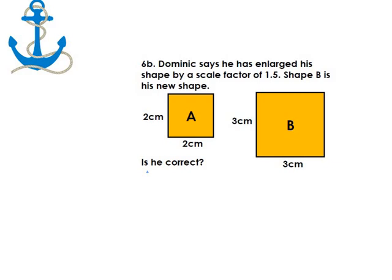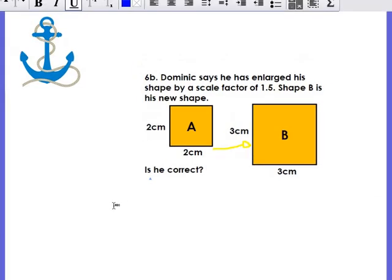He is then saying that his new shape, which is B, has been times by a scale factor of 1.5. So from two to three, we can check. It's the same shape, so we know that is correct. And we know that two times 1.5 equals three. So he is correct.